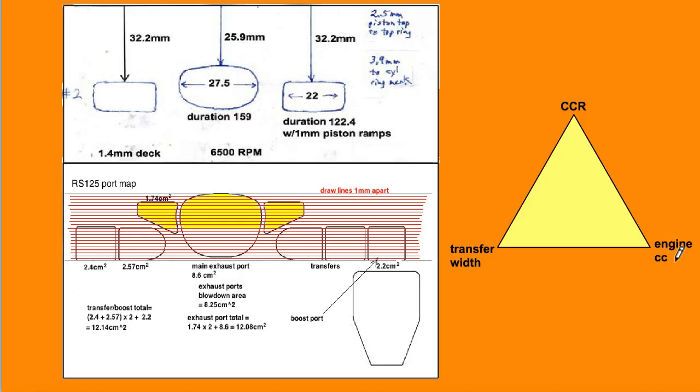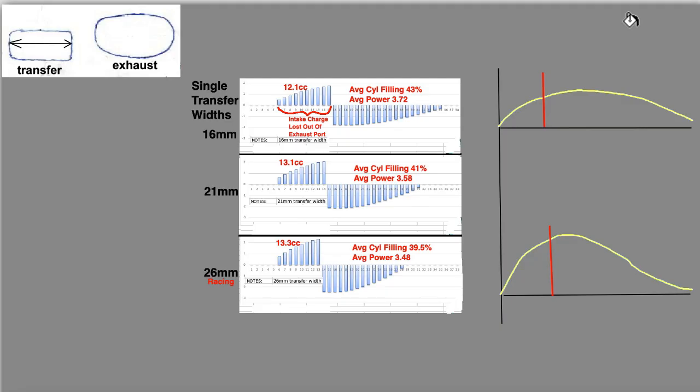The engine CC, which determines the loop flow distance from down there at the bottom where the transfer ports open up to the cylinder head and then across the cylinder head and then down to the exhaust port. The crankcase compression ratio, which determines the PSI in the crank when the transfer is open and the transfer width, the transfer width affecting the form of these two graphs.